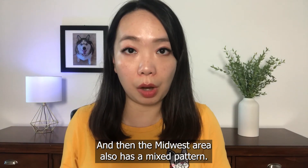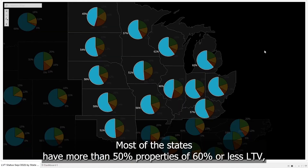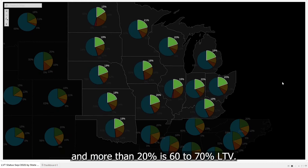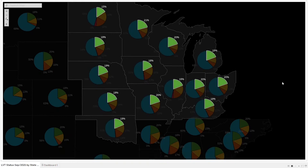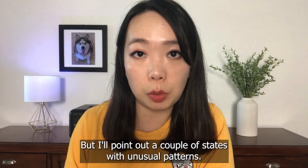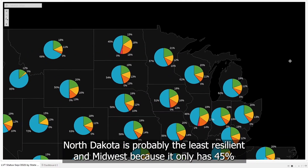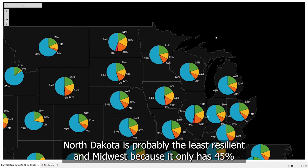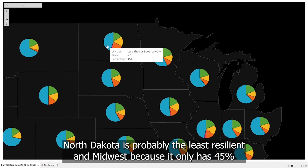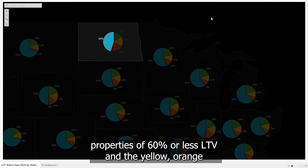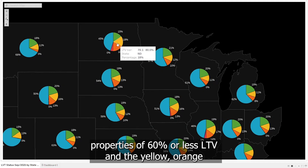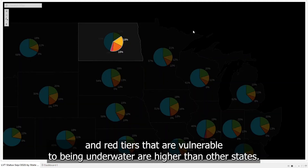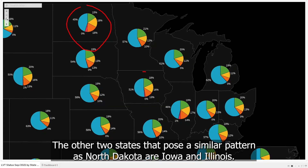The Midwest area also has a mixed pattern. Most states have more than 50% of properties at 60% or less LTV and more than 20% at 60% to 70% LTV. However, a couple of states show unusual patterns. North Dakota is probably the least resilient in the Midwest, with only 45% of properties at 60% or less LTV, and the yellow, orange, and red tiers that are vulnerable to being underwater are higher than other states. Iowa and Illinois pose a similar pattern to North Dakota.